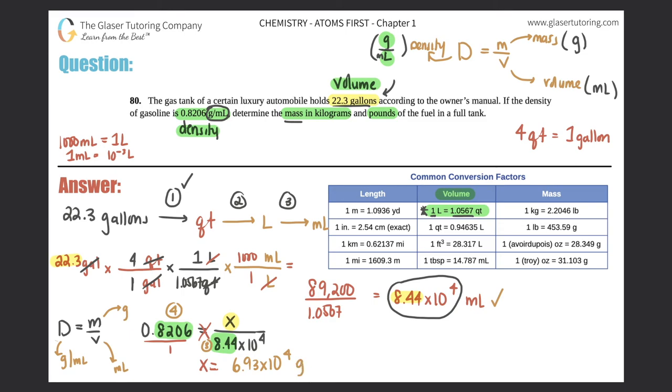Now they wanted to find it out in kilograms, so that's another SI unit conversion. A thousand grams equals one kilogram. So 6.93 times 10 to the fourth grams times that ratio: grams goes on the bottom, kilograms up top, one kilogram equals a thousand grams. Cross off those grams, and 6.93 times 10 to the fourth divided by a thousand is 69.3 kilograms. That's your answer to the first part.